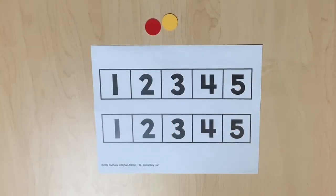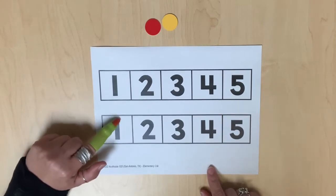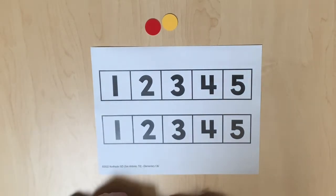When we compare numbers, we can use two number paths arranged one on top of another. Using colored counters, we can compare two numbers using comparative language.